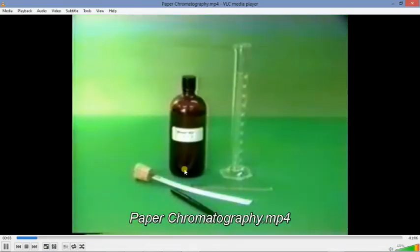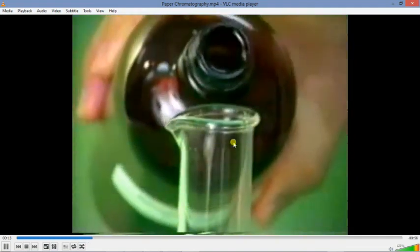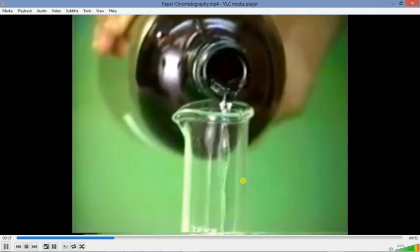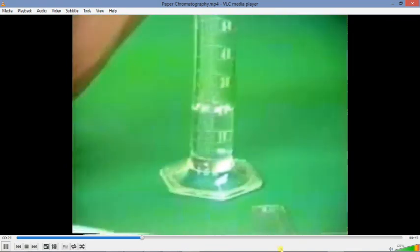They have a container with ethanol diluted with water. Ethanol is an alcohol. In this example, we're looking at the purity of ink in a pen. We want to know what makes up this black ink. When we put the piece of paper in the ethanol, the ethanol gets drawn up the paper.